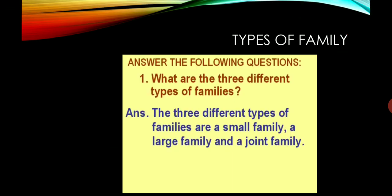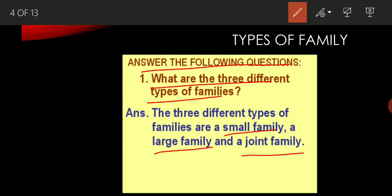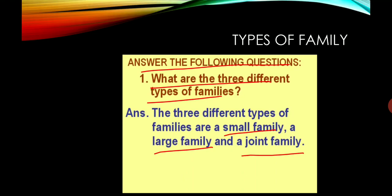Now the next topic is types of family. How many types of family are there? Basically, there are three types of family: small family, large family, and joint family. One by one we will discuss what is a small family, what is a large family, and what is a joint family.